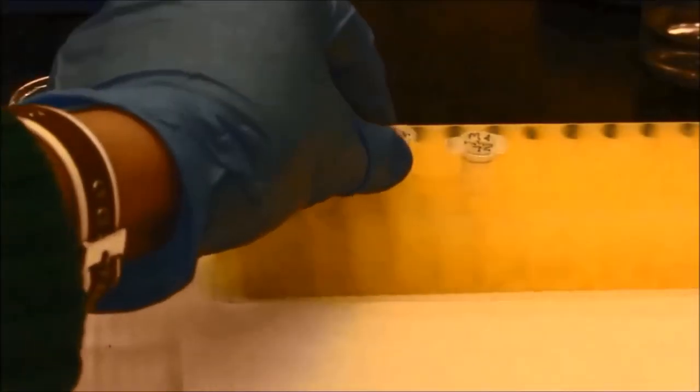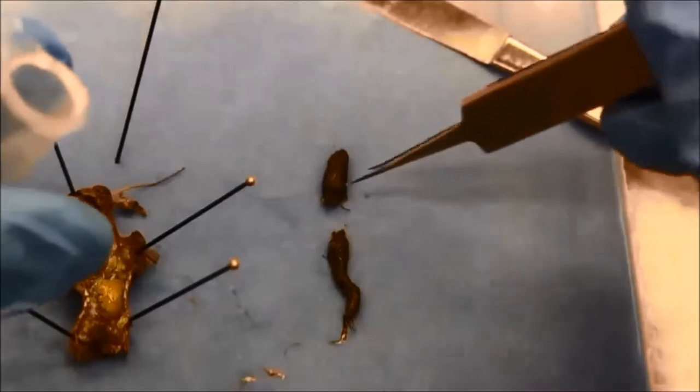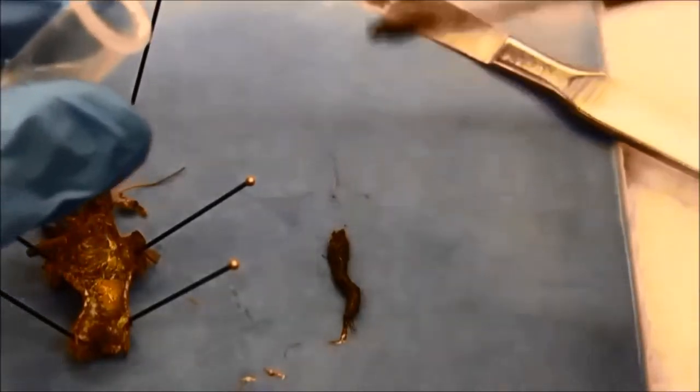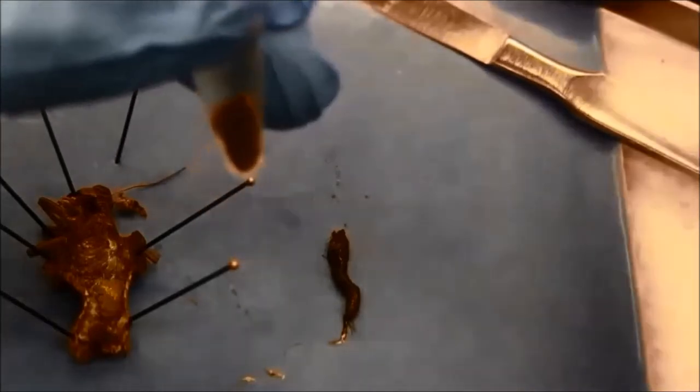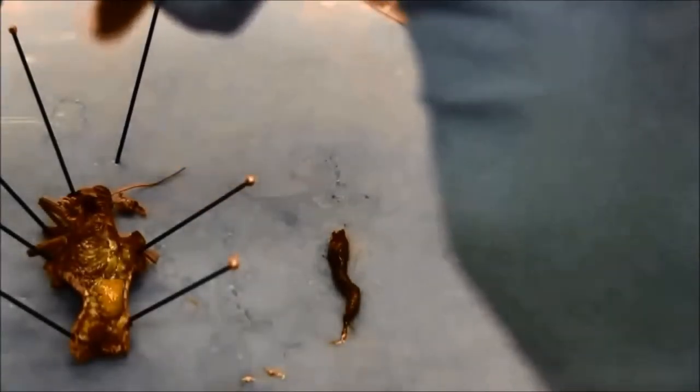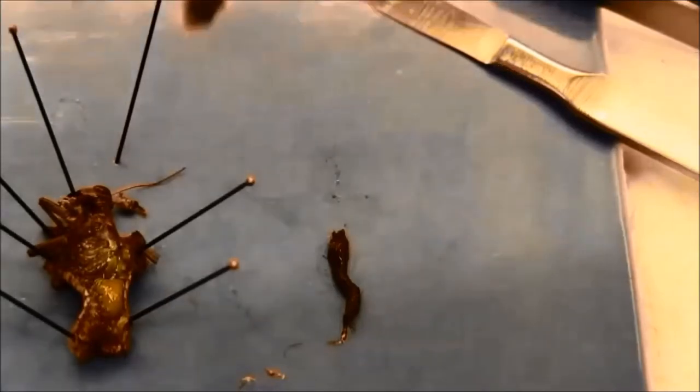Then I need to place the foregut, midgut, and hindgut parts separately into microcentrifuge tubes with 70% ethanol and store them overnight before the DNA extraction.